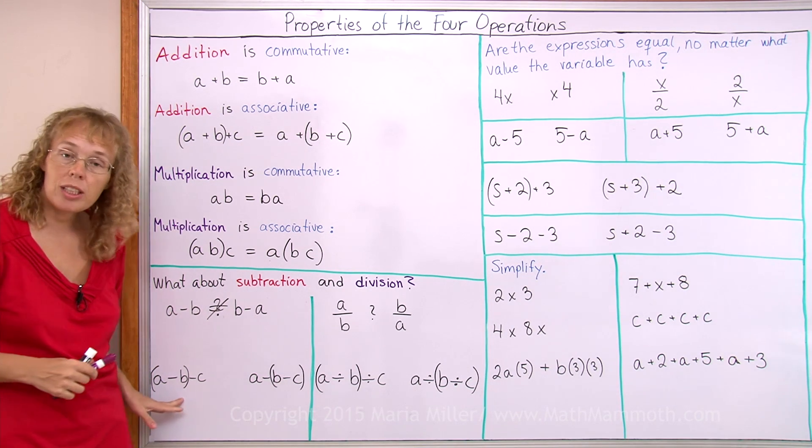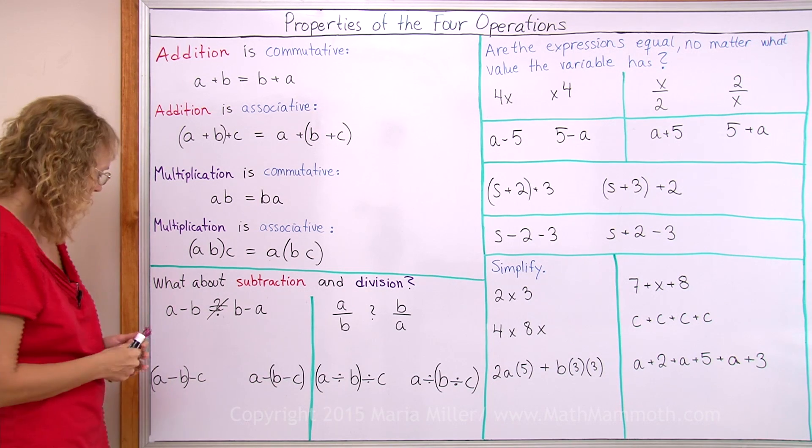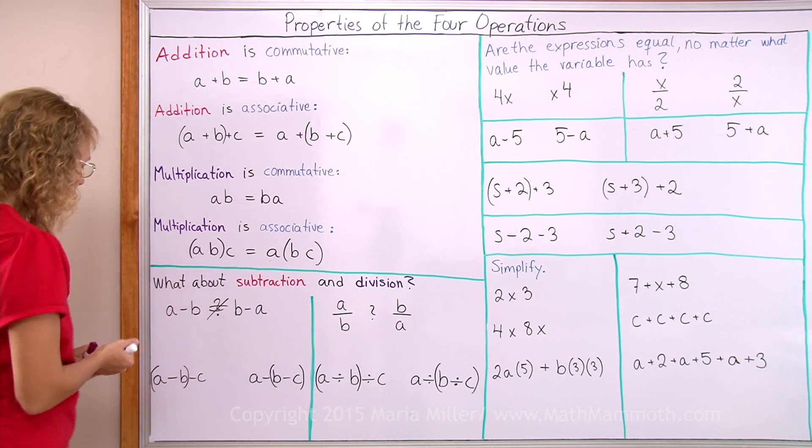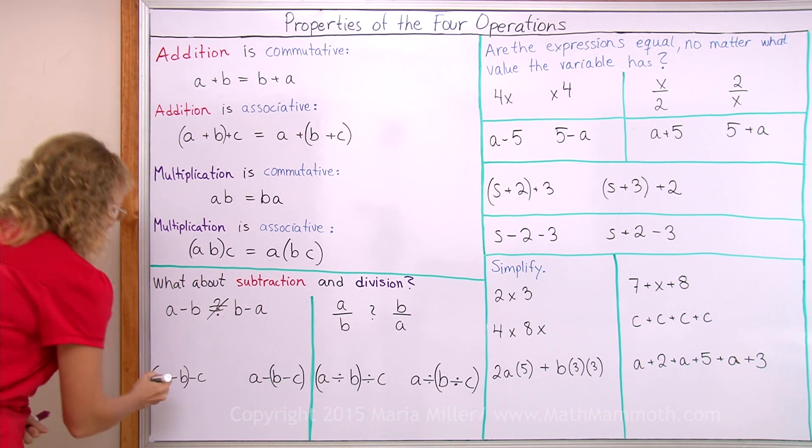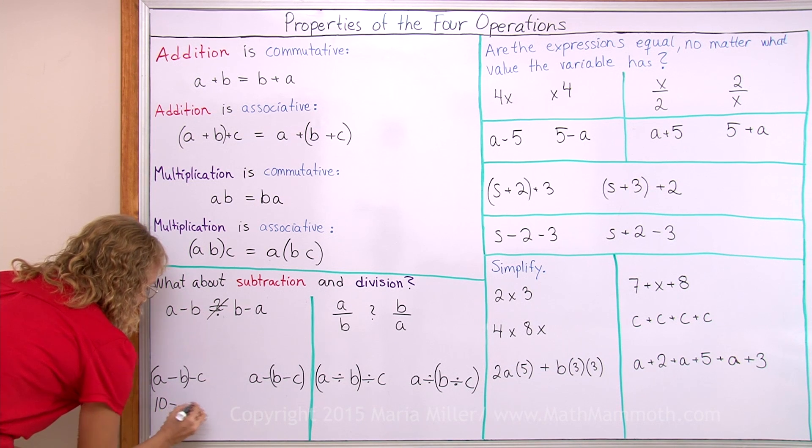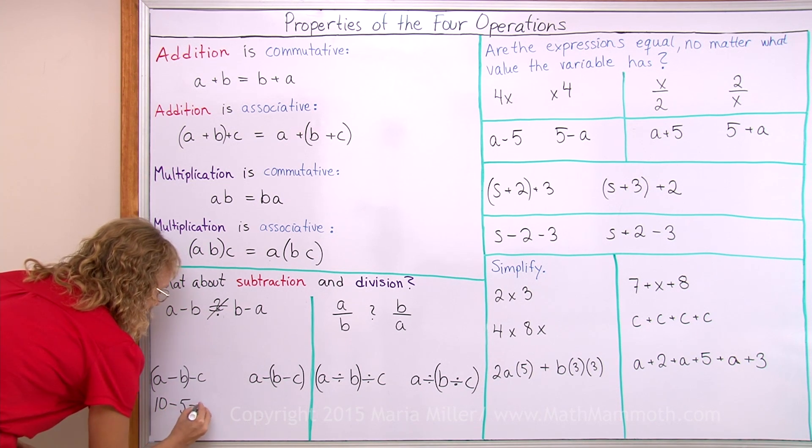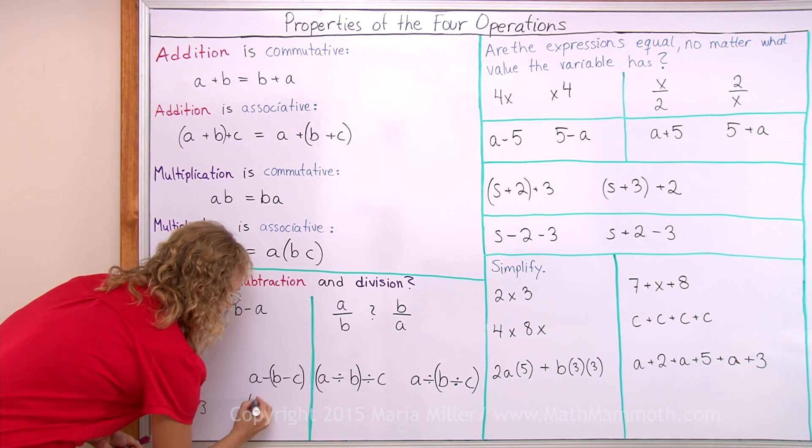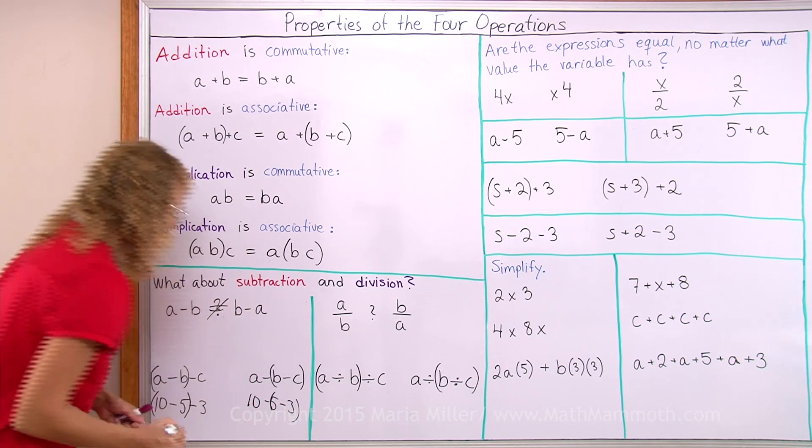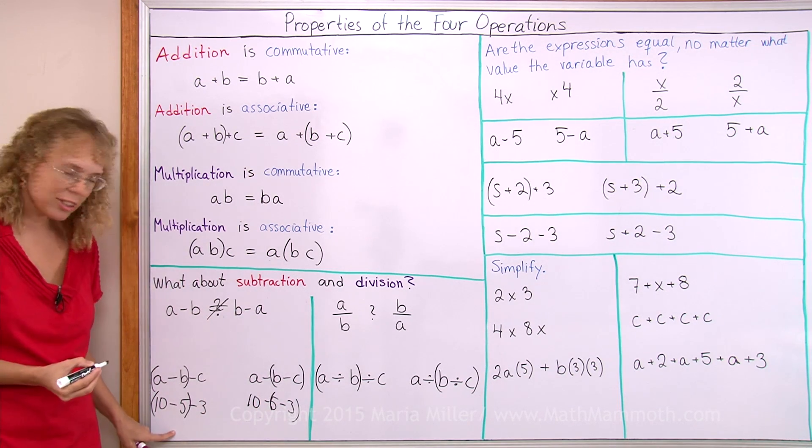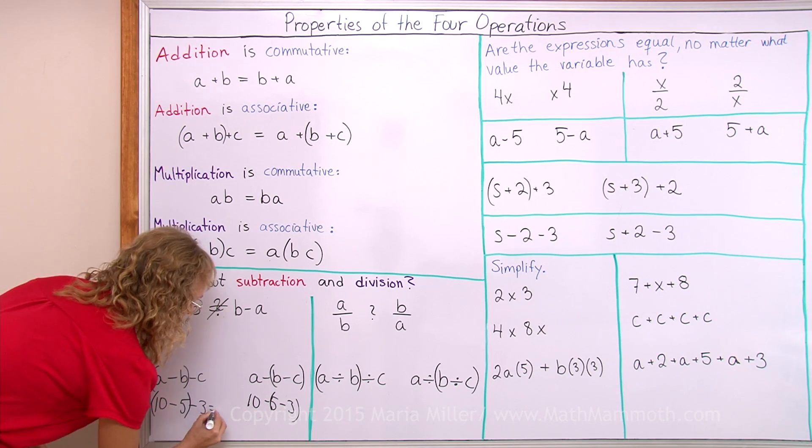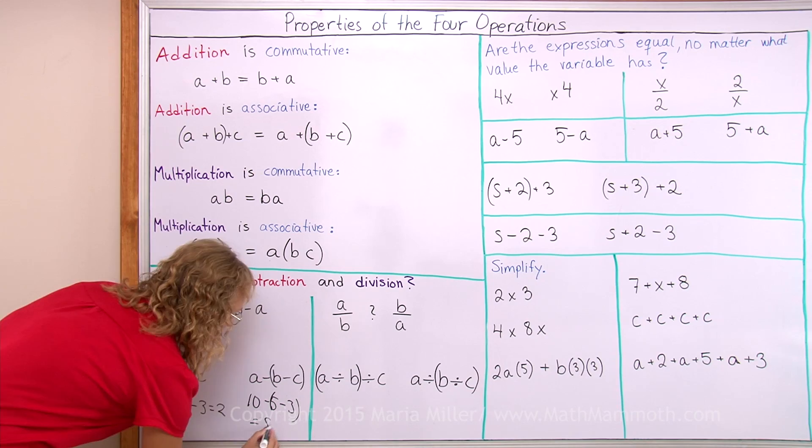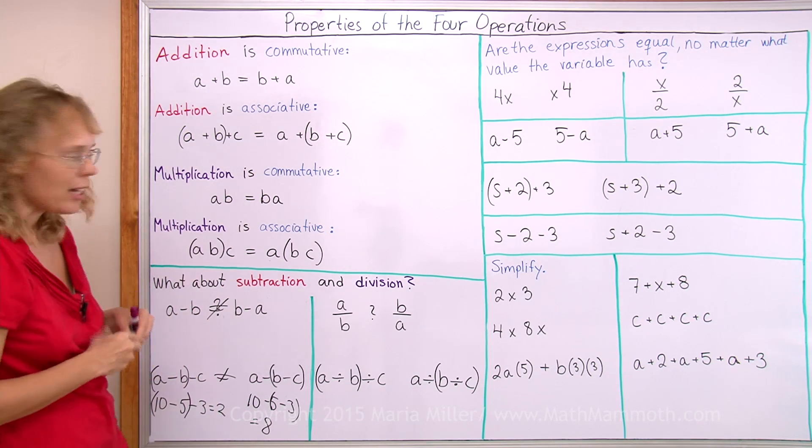How about the associative property of subtraction? We can check it out or we can actually prove that it is not true by choosing any numbers and showing that it is not true. Like 10 minus 5 minus 3. Over here 10 minus 5 first means 5 minus 3. This equals 2. And over here 5 minus 3 first is 2 and 10 minus 2 equals 8. So no, there is no such thing for subtraction.